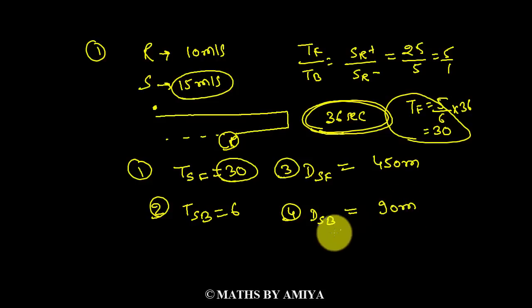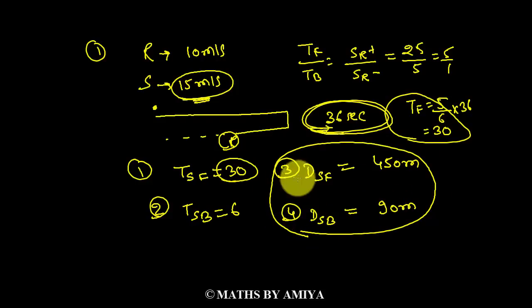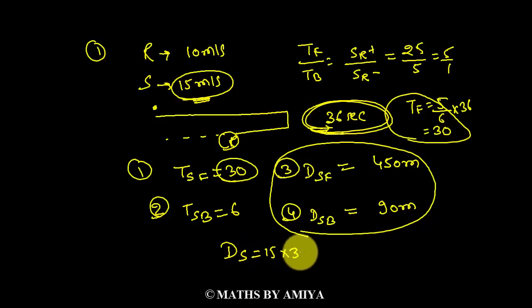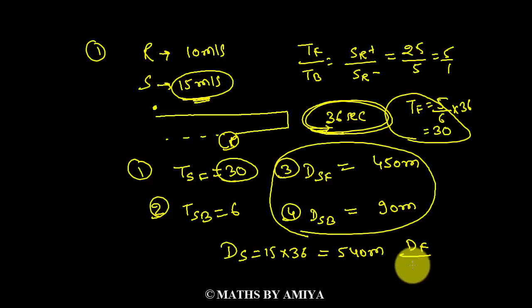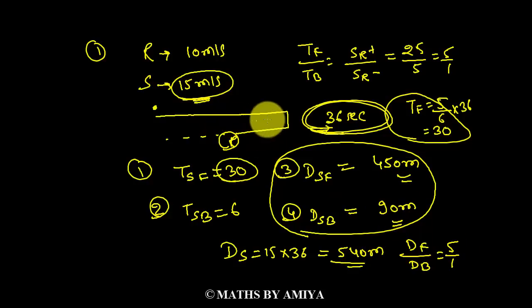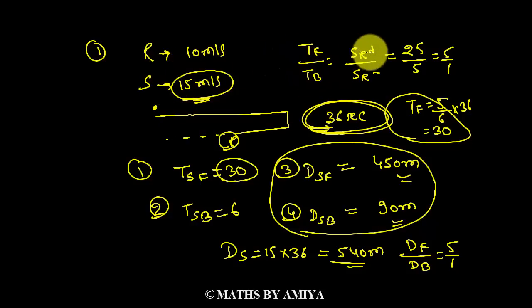We can also find distance forward and backward directly without calculating time. Total distance by Sam equals 15 times 36 equals 540 meters. We know distance forward upon distance backward equals 25 to 5, so the ratio is 5 to 1. Dividing 540 in a 5 to 1 ratio gives 450 meters forward and 90 meters backward — same answer. So whenever you have a to-and-fro journey, apply: time forward to time backward equals speed relative plus to speed relative minus, or distance forward to distance backward equals speed relative plus to speed relative minus.